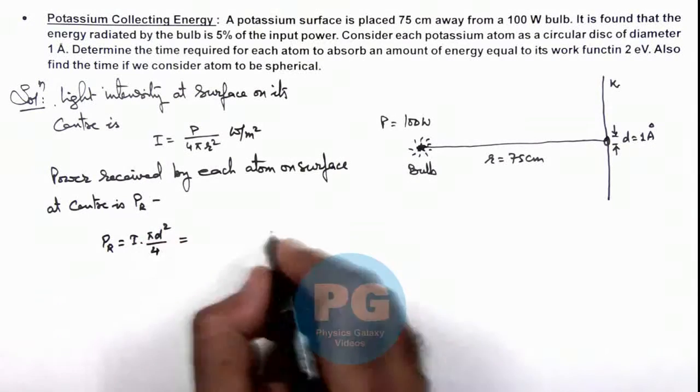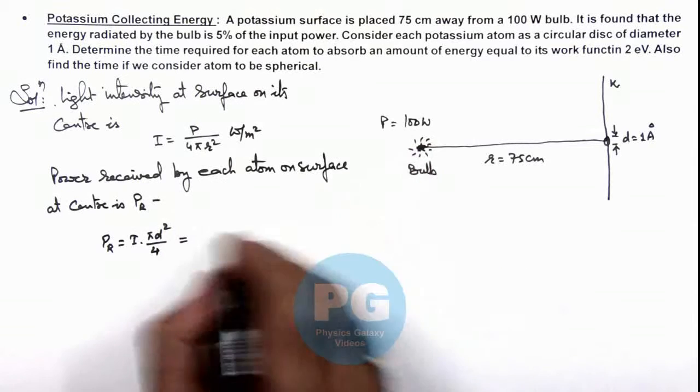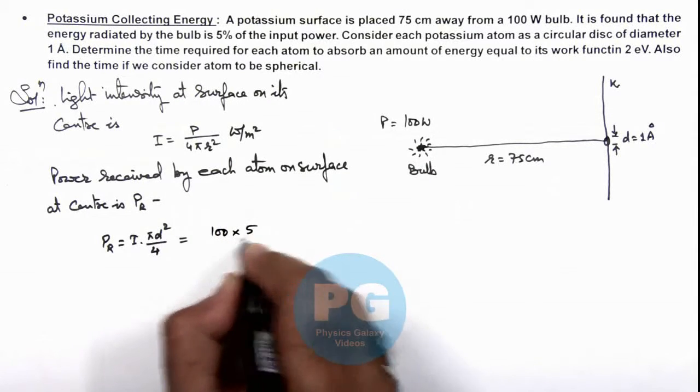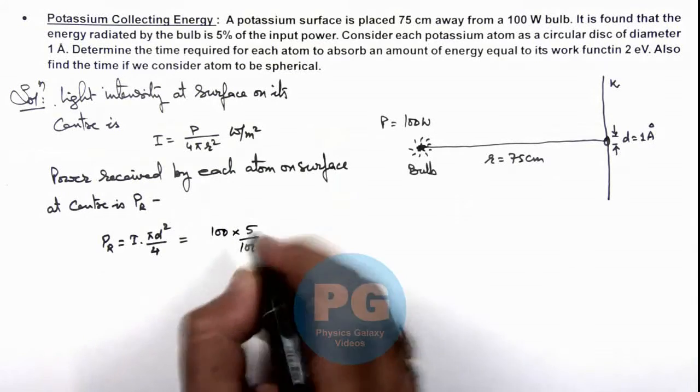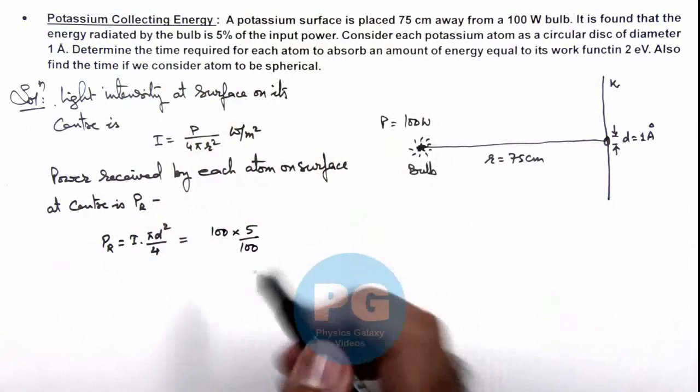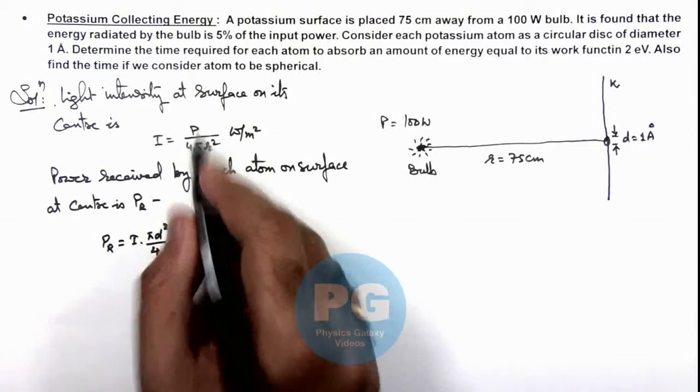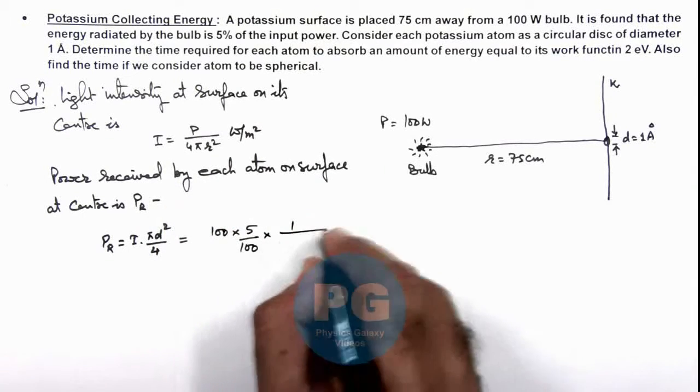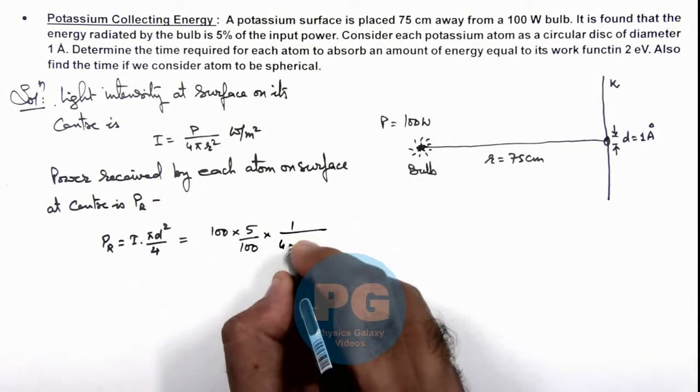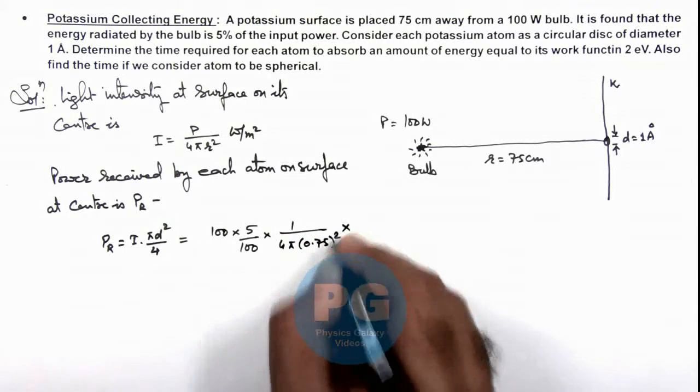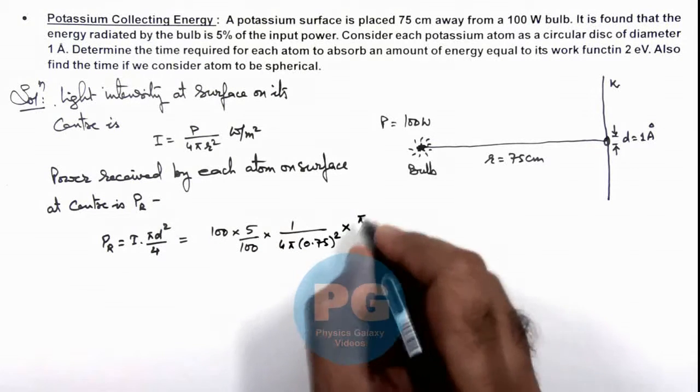The intensity is P/(4πr²), so power is 100 × 5/100, as only 5% of the input power is radiated, multiplied by 1/(4π × 0.75²), and then multiplied by πd²/4.